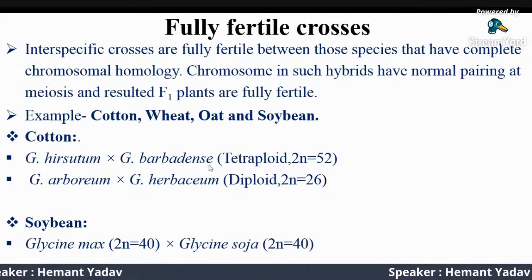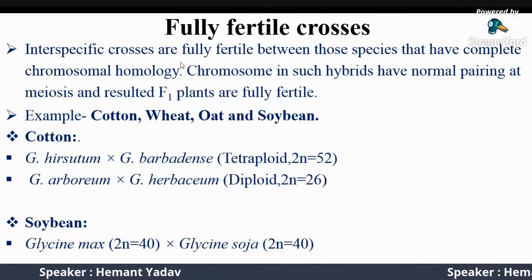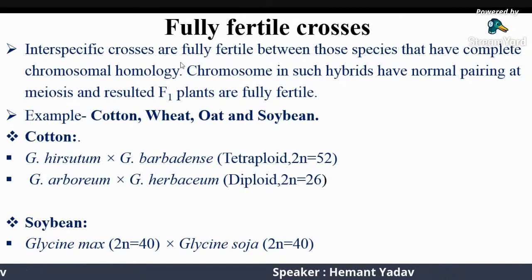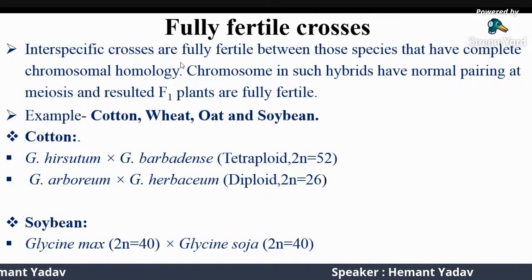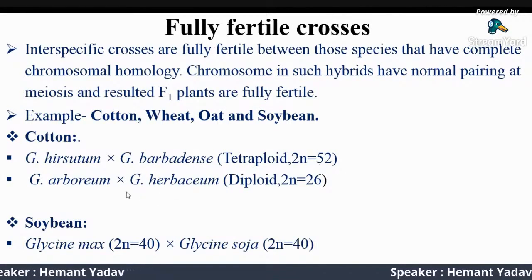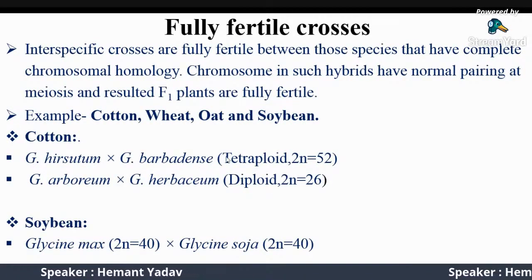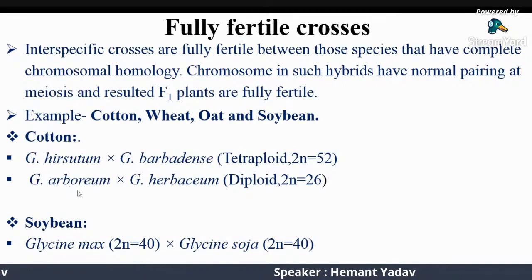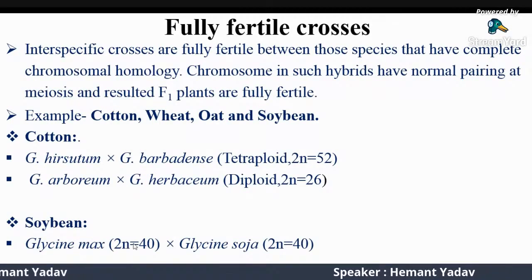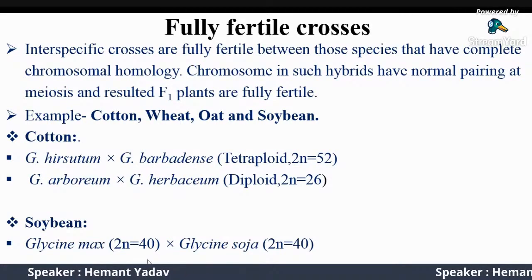Inter-specific hybrids are fully fertile between those species that have complete chromosome homology. Chromosomes in such hybrids have normal pairing at meiosis and resultant F1 plants are fully fertile. For example, in cotton there are four species: Gossypium hirsutum, Gossypium barbadense, Gossypium arboreum, and Gossypium herbaceum. When a cross is made between Gossypium hirsutum and Gossypium barbadense, the hybrid is fully fertile. Similarly, a cross between Glycine max and Glycine soja, which both have chromosome number 40, is fully fertile.